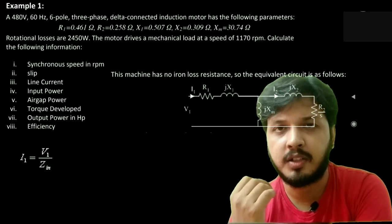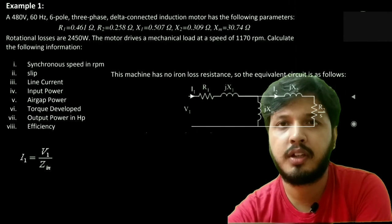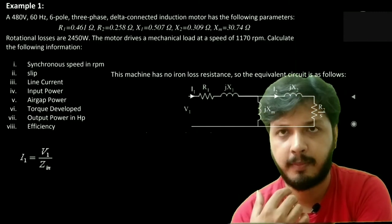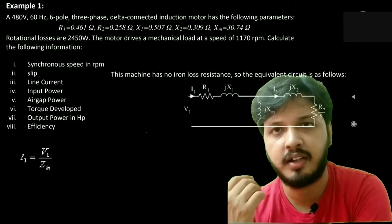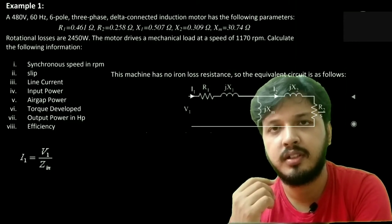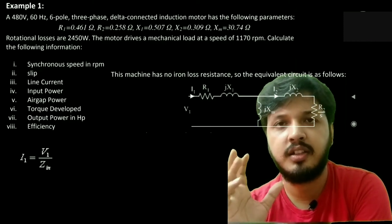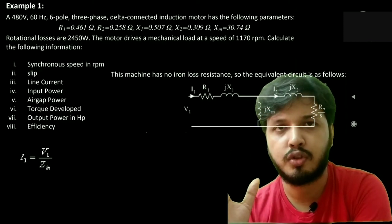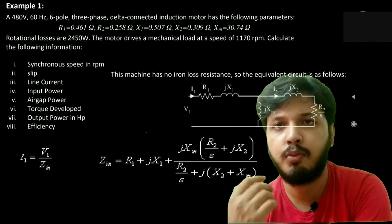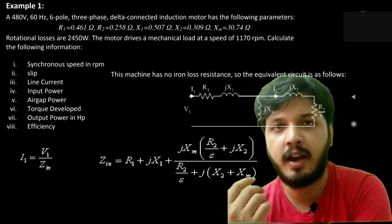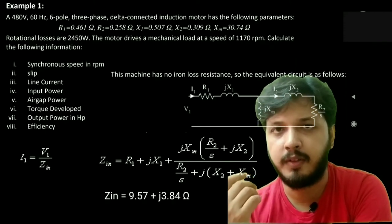Now the per-phase current is given by per-phase input voltage divided by per-phase impedance. So first we will calculate the per-phase input impedance. From the equivalent circuit, we have seen that R2 by S and jX2 are in series, and this whole thing is parallel with jXM. The total unit is in series with R1 plus jX1. So total impedance will look like this. Putting the value of R1, X1, R2, X2, and XM, we'll find ZIN equal to 9.57 plus j3.84 ohm.